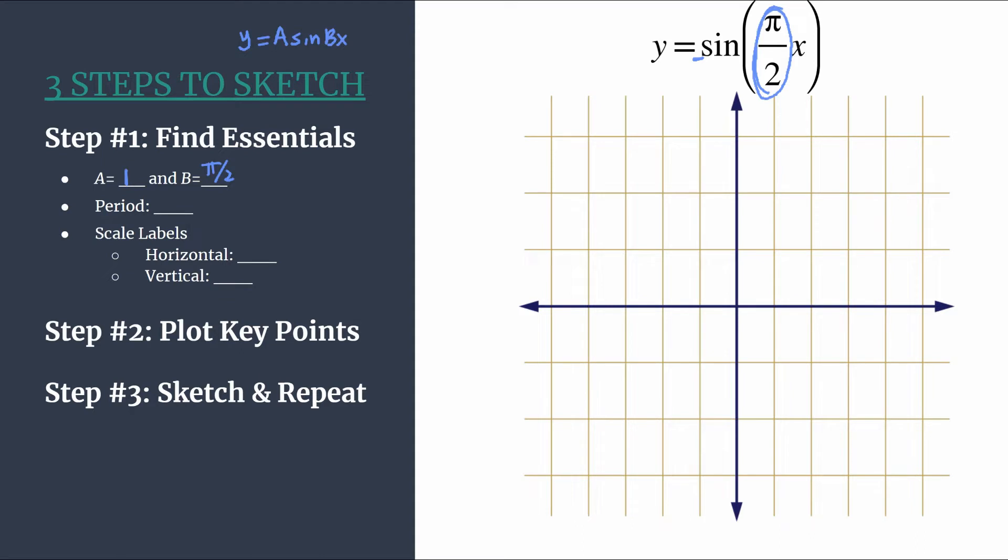So we'll take a look at that at the end once we have our graph. But it is helpful to know that you should see about one and a half cycles between zero and two pi. So that's the first useful bit from b. We also know we need b to find the period. So for sine, we calculate the period using two pi divided by b.